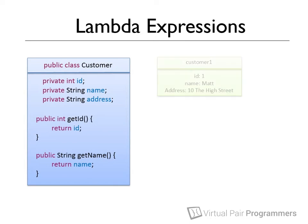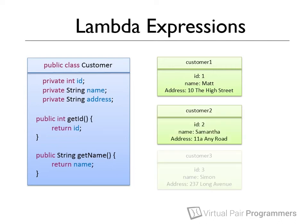Each instance of an object has an identity, a way of referring to that particular instance. This identity might be the name of a variable or a position within a collection. We can have more than one instance of a class, and each instance will share the same functionality but will have potentially different data, and will also have its own identity.